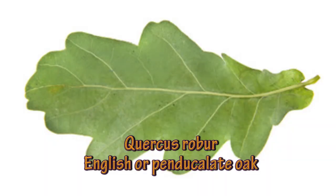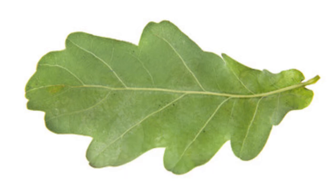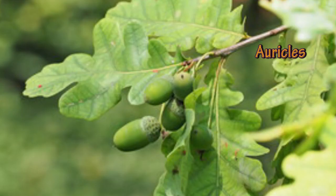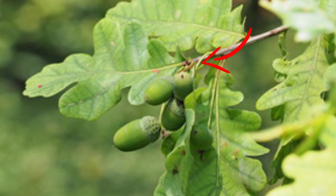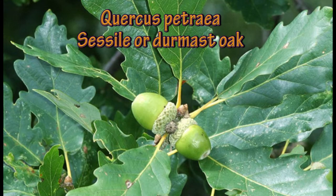This is the English oak, Quercus robur. One of the key things if you've got the leaf on its own is it has two little auricles that poke down — the sessile oak doesn't have those. You can see here that the English oak has these stalks, so the acorns are born on little stalks.